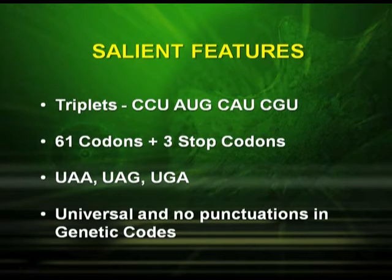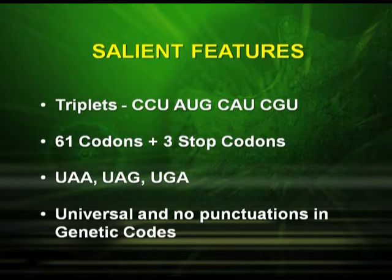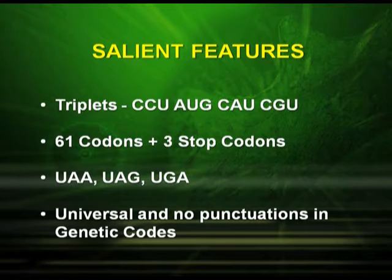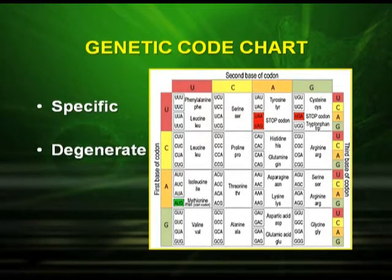Now let us see the salient features of the genetic code. The first important feature is that it is a triplet — made up of three bases, for example CCU, AUG, CAU, and CGU. There are sixty-one codons and three stop codons, totaling sixty-four codons. The stop codons are UAA, UAG, and UGA. Another very important feature is that the genetic code is universal — whether it is a bacterium or a human being, the three bases code for the same amino acid.